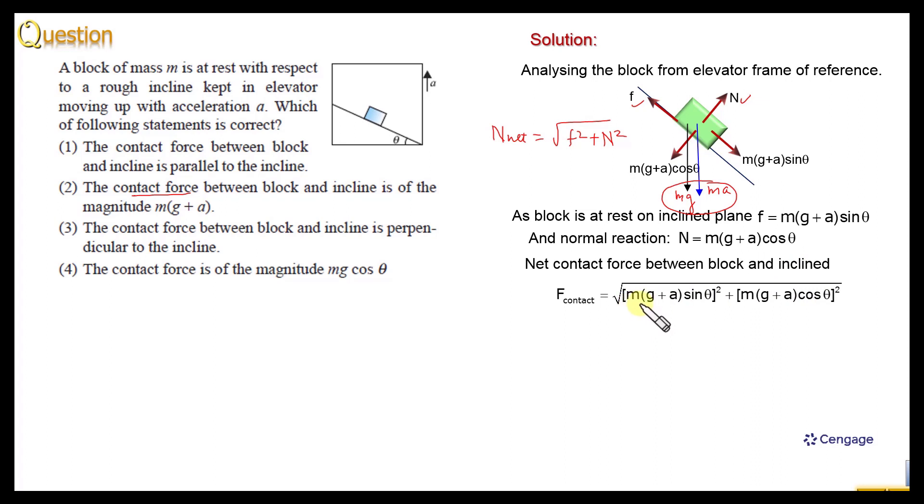Now, we can take mg plus a common here and here also and this is the square we can take outside the under root. We can write mg plus a sin squared theta plus cos squared theta. Sin squared theta plus cos squared theta is equal to 1 that means f contact should be equal to mg plus a.